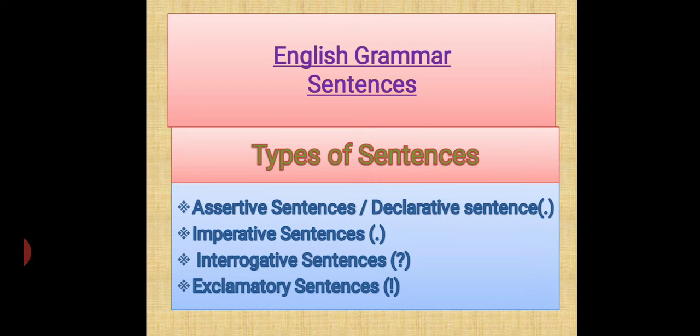Coming to the exclamatory sentences. This sentence starts with a capital letter and ends with an exclamation mark. Here it means when you have a sudden feeling of surprise, happiness, or joy — sudden expressions are revealed by the speaker. Then that type of sentence becomes your exclamatory sentence.